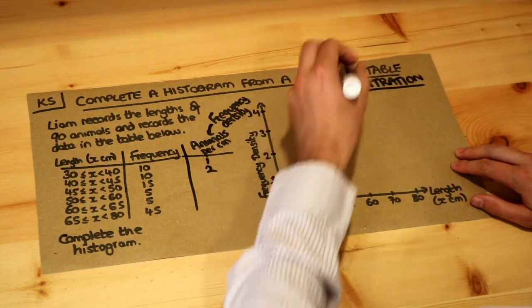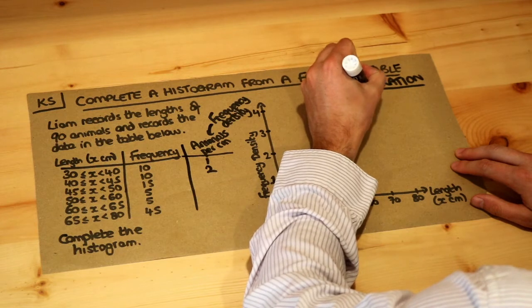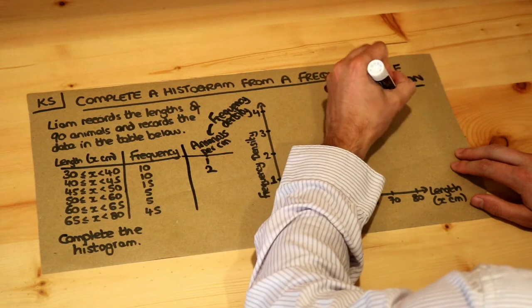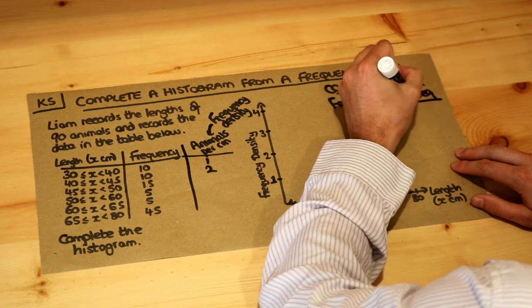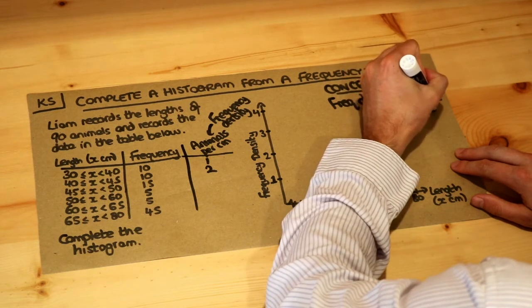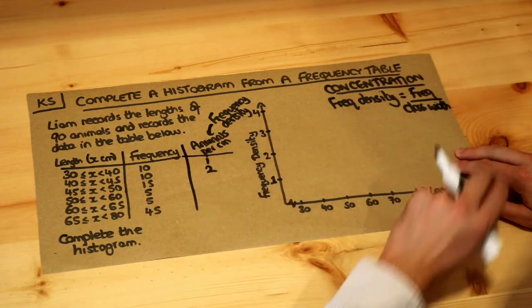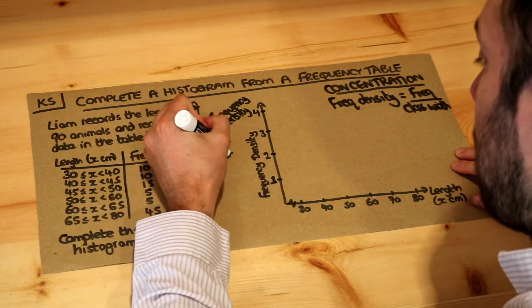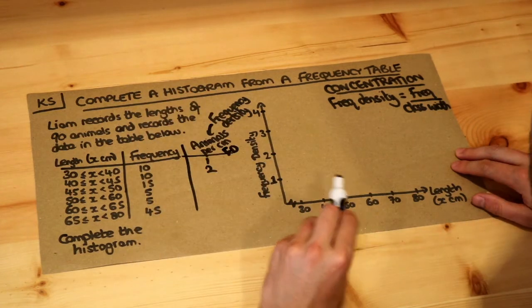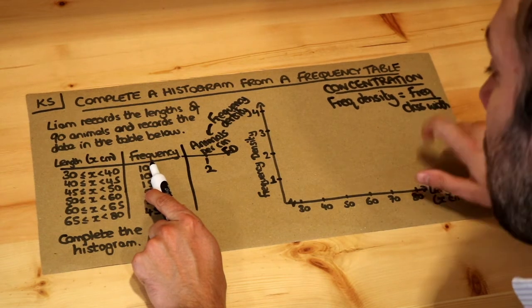And the formula for frequency density is this. So frequency density, FD for short, is just the frequency divided by the class width. Now this formula is basically what we just did on the left. We did it intuitively, but now we have a formula for it. So the frequency density, let's relabel this as FD for frequency density.